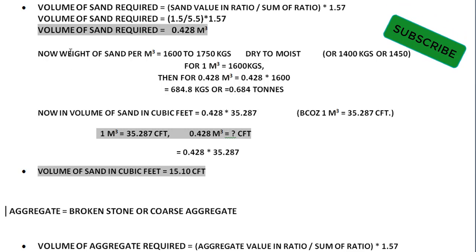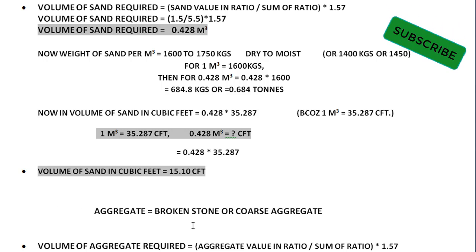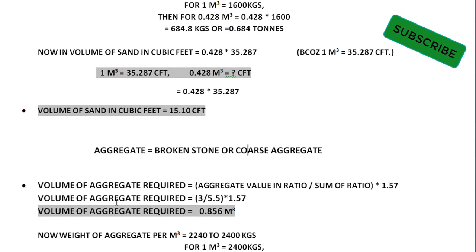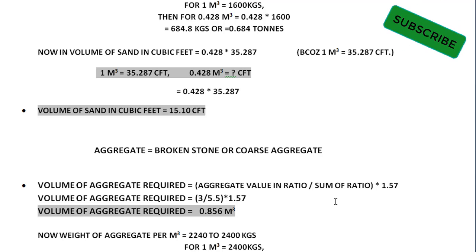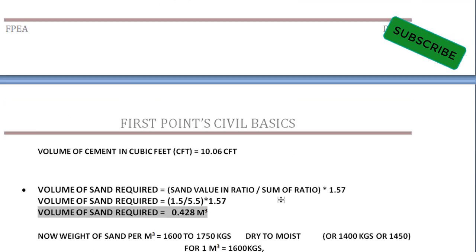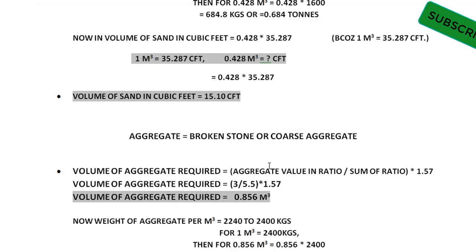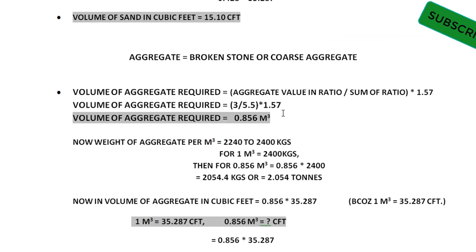Now we calculate the volume of aggregate, also called broken stone or coarse aggregate — these three terms refer to the same material. The formula is: (aggregate ratio / sum of ratio) multiplied by 1.57. That is (3 / 5.5) multiplied by 1.57, which equals 0.856 cubic meters.